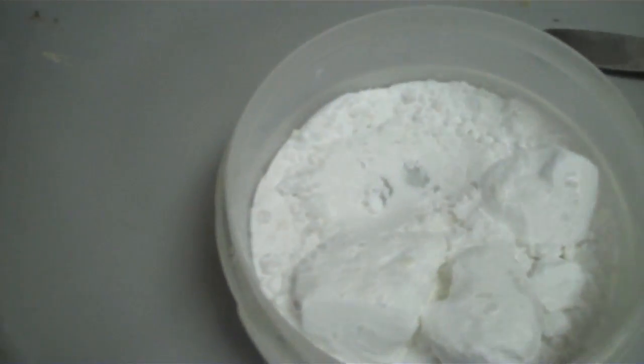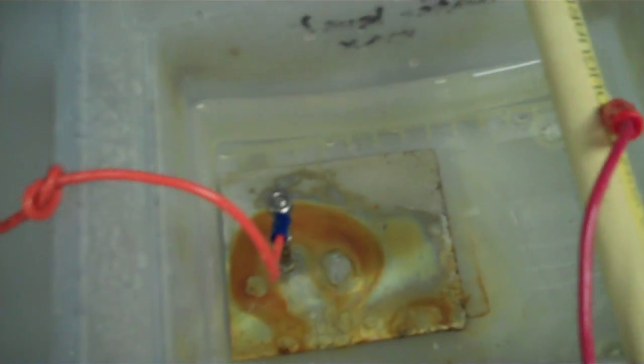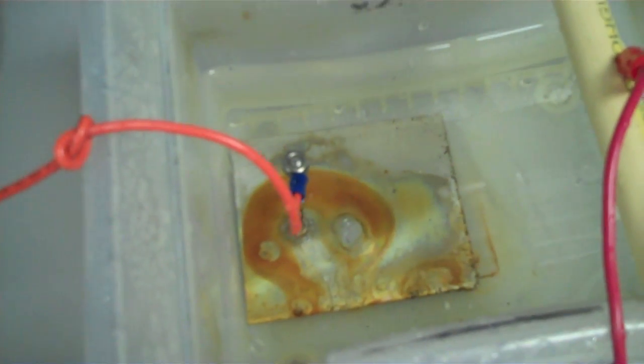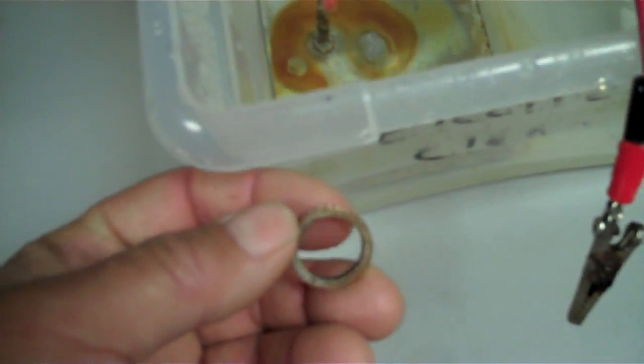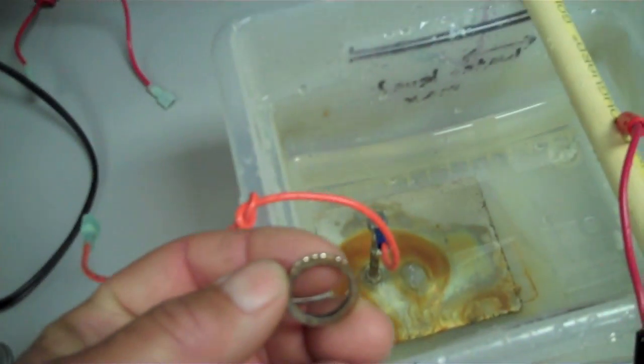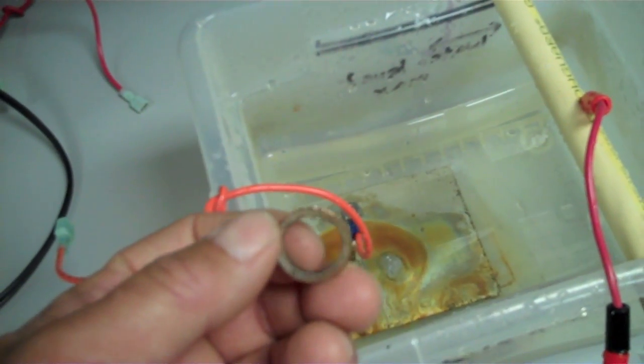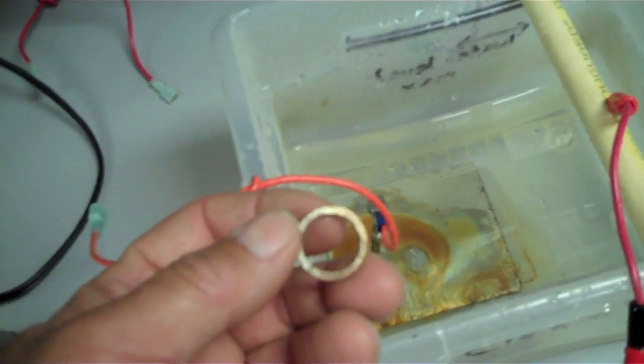I've added some baking soda, about two tablespoons worth, into the water and stirred it up, made a mixture. And this particular ring will probably require about maybe five or ten minutes in the unit to get it real shiny. So I'm going to do that now.